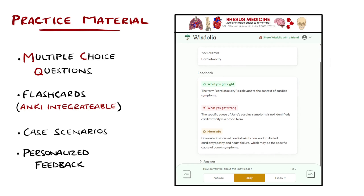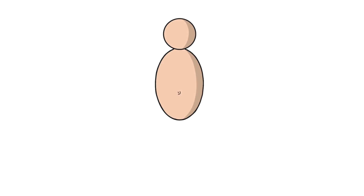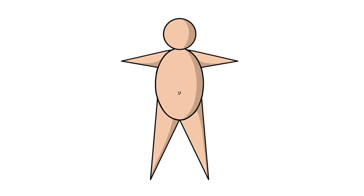Begin by picturing a circle for the head and another for the body, with two arms and two legs formed by V-shapes, with Ts at the end of each limb for hands and feet.